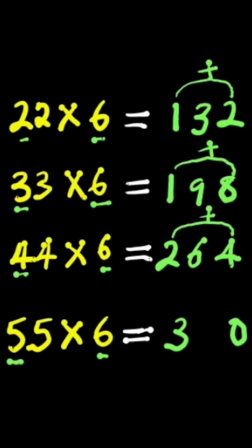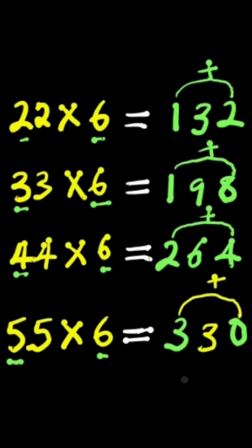And finally, 3 plus 0. Then, 3 plus 0 is 3. We have 3 here. So, this is our answer. Thank you and goodbye.